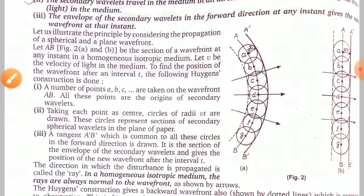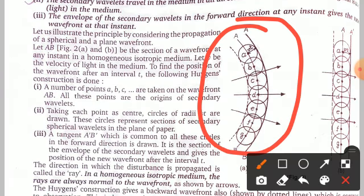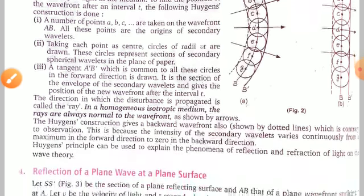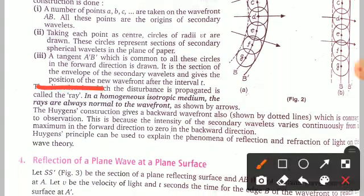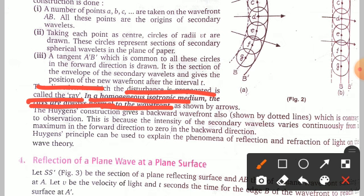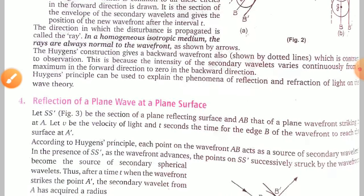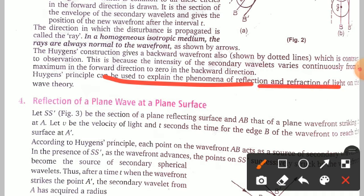There is a geometrical representation of Huygens' wave theory showing both constructions. The direction in which the disturbance is propagated is called the ray. In a homogeneous isotropic medium, the ray is always normal to the wavefront, as shown by the arrows. Huygens' construction also gives a backward wavefront shown by dotted lines, but the intensity varies from maximum in the forward direction to zero in the backward direction. Huygens' principle can be used to explain reflection and refraction of light.